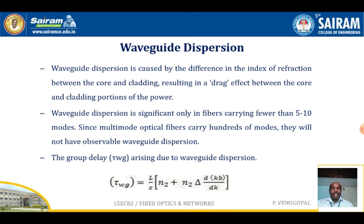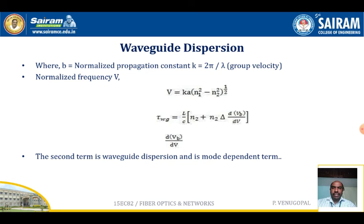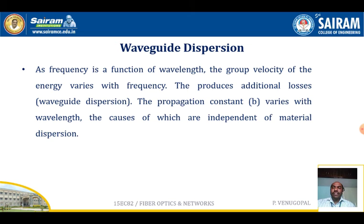Here, b is the normalized propagation constant, k = 2π/lambda is the wave vector, and the normalized frequency V = k × a × sqrt(n₁² − n₂²). The waveguide dispersion term is d(Vb)/dV. Since multimode optical fibers carry hundreds of modes, they will not have observable waveguide dispersion. The propagation constant varies with wavelength, causing waveguide dispersion independent of material dispersion.